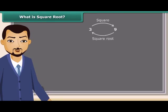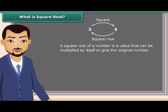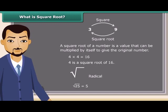Square root is an inverse operation of squaring. It is a value that can be multiplied by itself to give the original number. So, we can say when 4 is multiplied by 4, we get 16, which means 4 is a square root of 16. A square root is represented by a special symbol. It is called the radical. We can use it like this: a square root of 25 is 5.